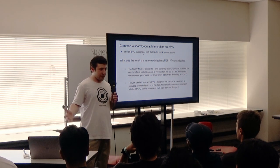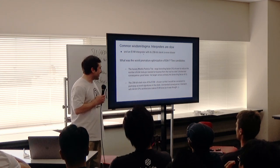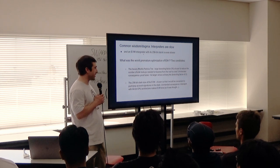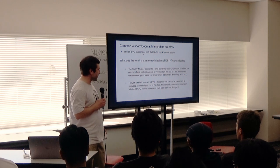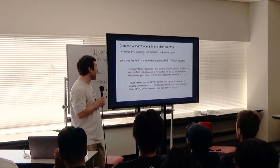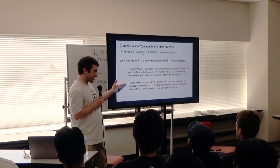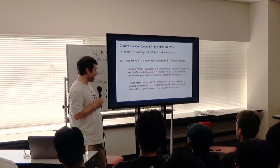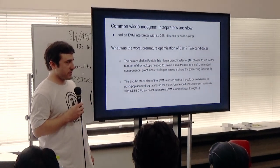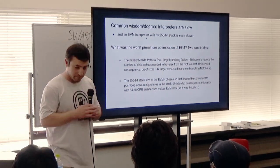I can't overemphasize the dogma we had to overcome: that interpreters are just too slow. I asked at the January meeting what was the worst premature optimization for Ethereum before the genesis block was launched in 2015. Two candidates came up: the Merkle Patricia tree — because as a consequence of its large branching factor, proof sizes for stateless clients are way too big — and Vitalik suggested it might be the EVM having a 256-bit stack size, because computer architectures are 64-bit, which makes EVM slow.